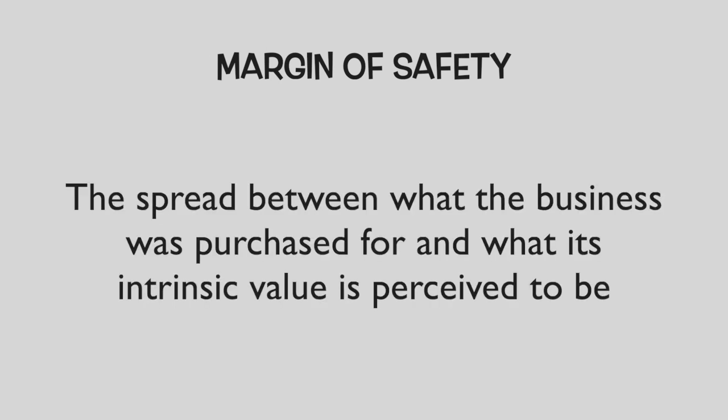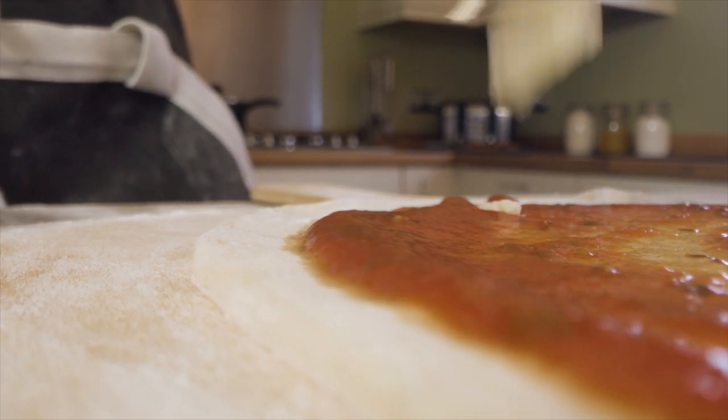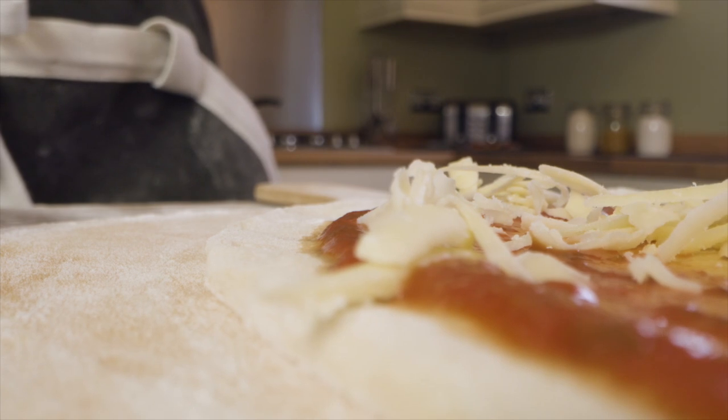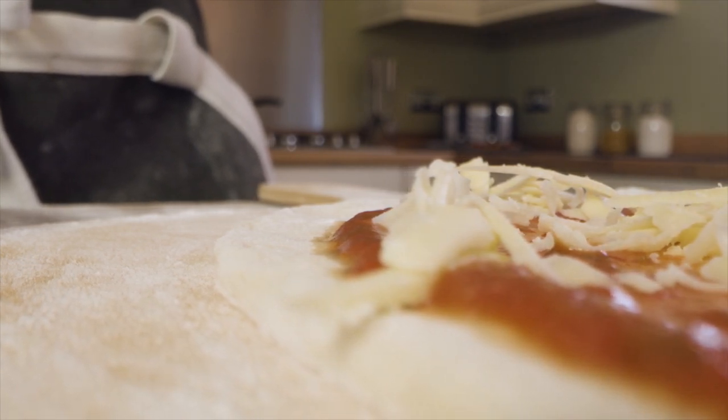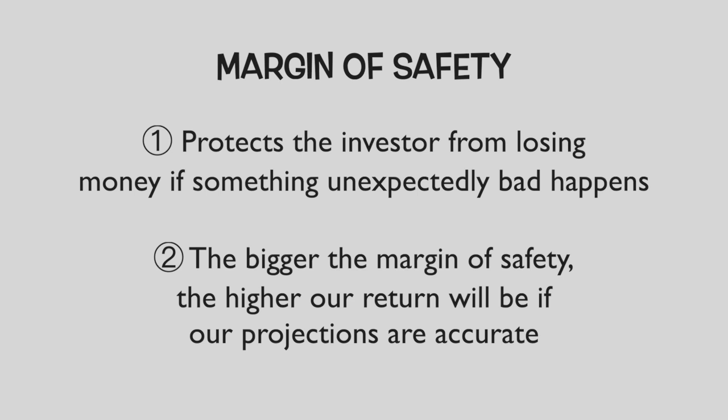So does that mean we should pay that amount to buy it? No. We ideally want to buy this business at a significant discount to what we determine to be the intrinsic value. The difference between what the business is worth and what we pay is our margin of safety. This helps protect us if our projections turn out to be too high — maybe a competitor opens up next door or the cost to make each pizza increases significantly. The margin of safety also means the bigger the discount we buy at, the higher our return will be if our projections prove accurate.